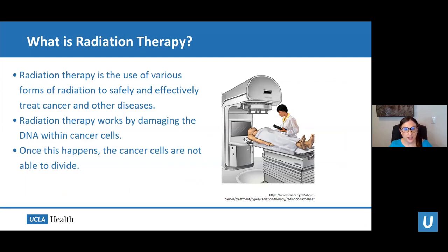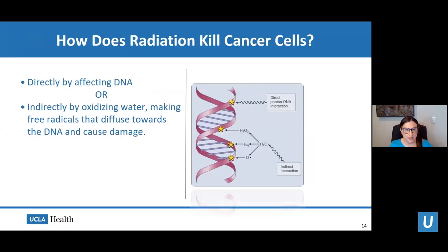Radiation therapy is the use of various forms of radiation to safely and effectively treat cancer. It works by damaging the DNA within cancer cells so they are no longer able to divide. Radiation kills cancer cells either by directly affecting the DNA, or indirectly by oxidizing water to create free radicals that diffuse toward the DNA and cause damage. This is why we don't want patients taking antioxidants — we want to induce the formation of those free radicals.